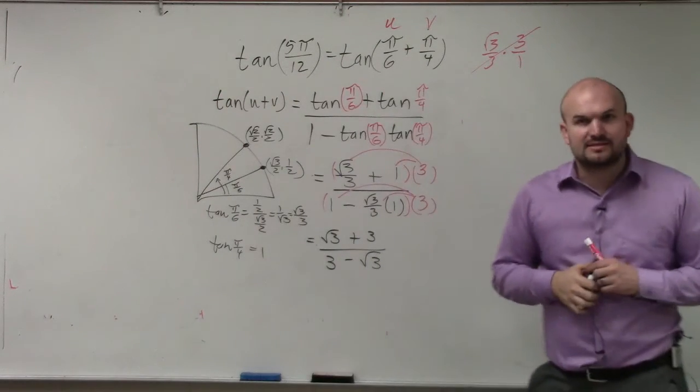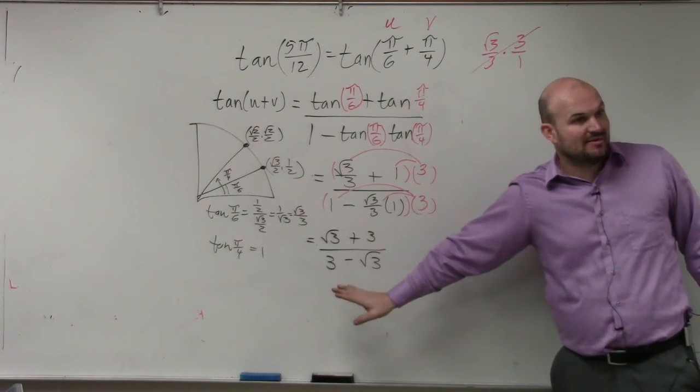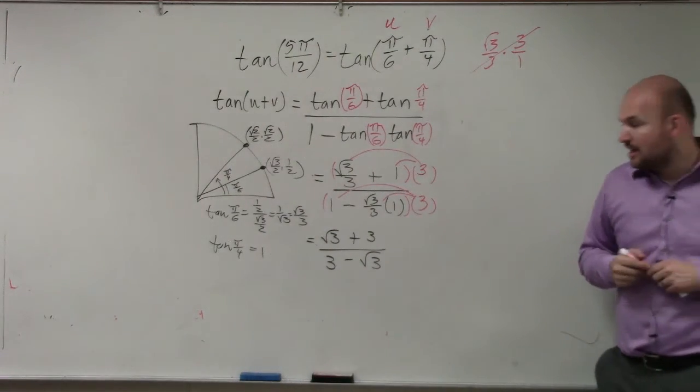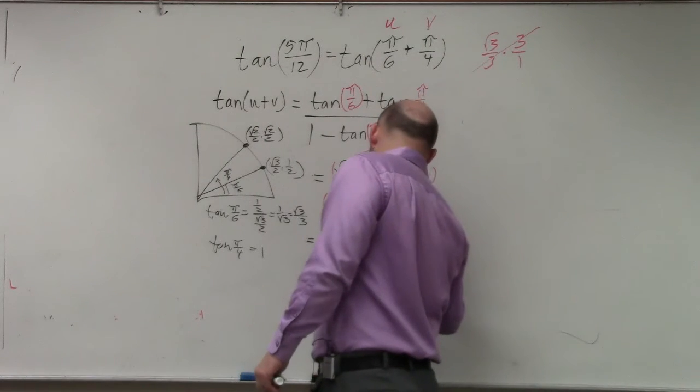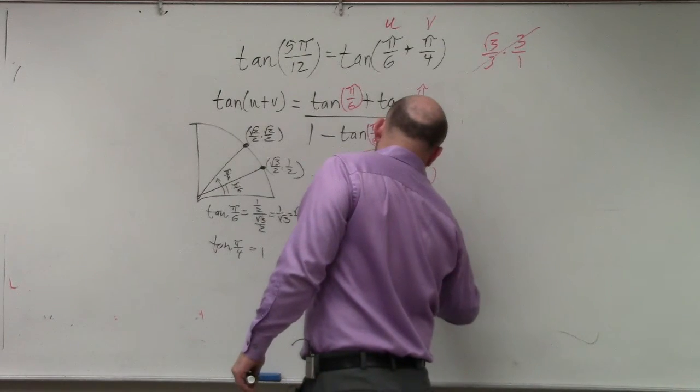Now, we need to multiply to get rid of our denominator. We need to multiply by the conjugate. So I'll multiply by 3 plus the square root of 3, 3 plus the square root of 3.